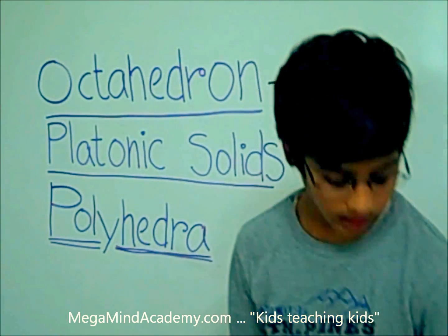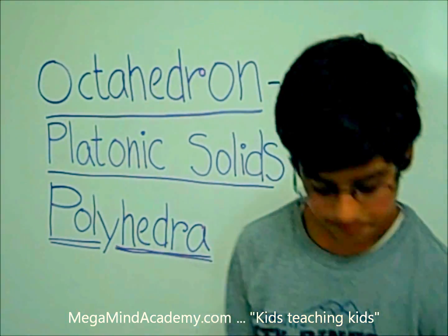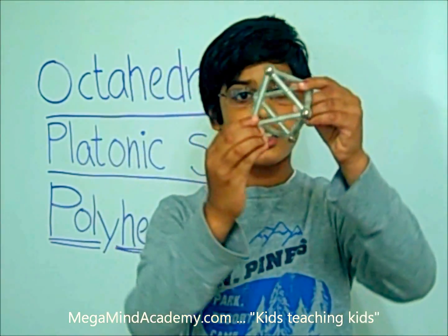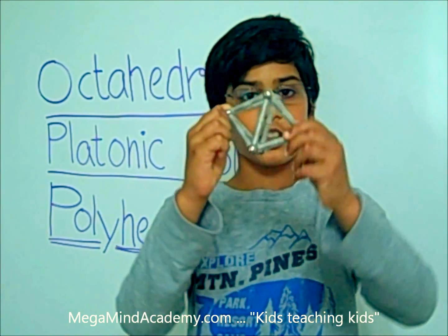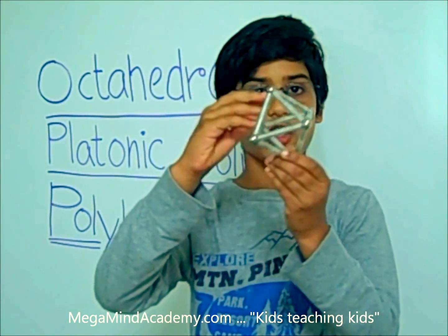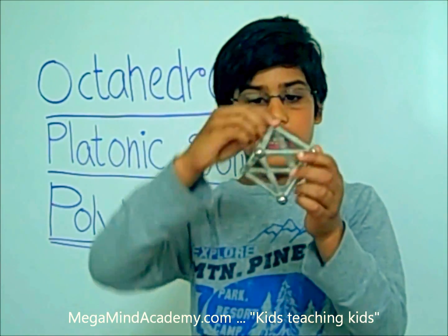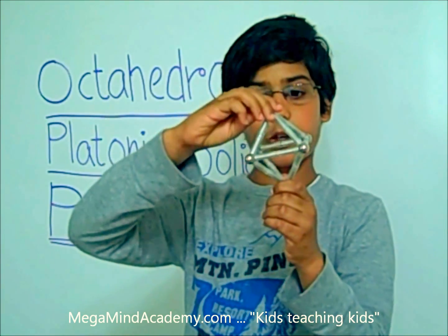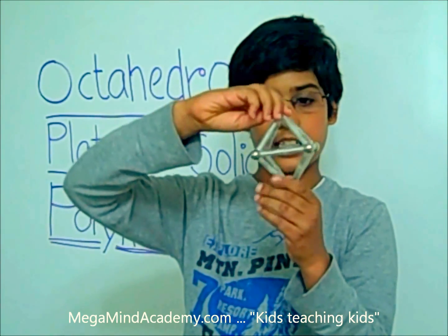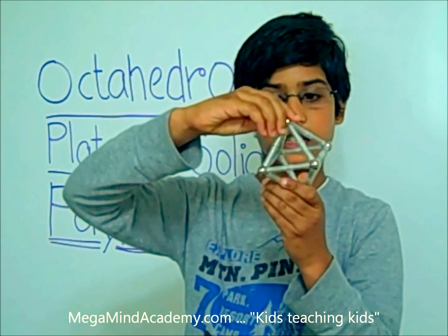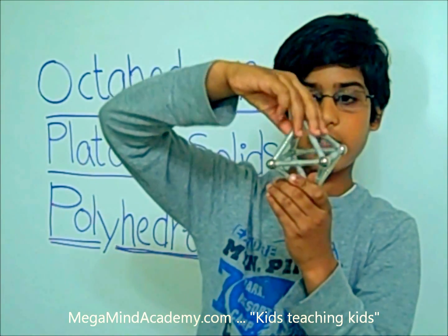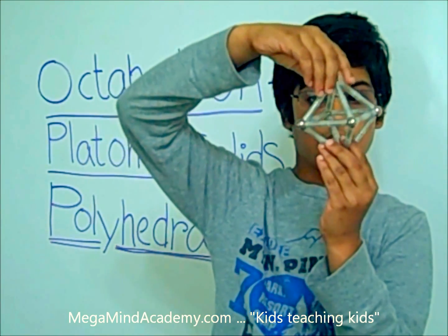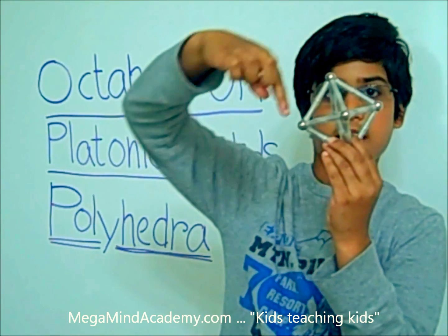An octahedron looks like this. As you can see, an octahedron is a unique and beautiful three-dimensional figure. It is unique because it has two square pyramids connecting, and they share one base. This is the top square pyramid, and this is the bottom square pyramid, and they share this base.